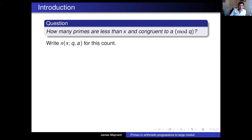You give me your three favourite positive integers x, a, and q, and I have to tell you how many primes there are which are less than x and congruent to a modulo q. I'm going to write pi of x, q, a for this number of primes.